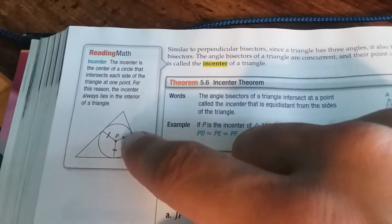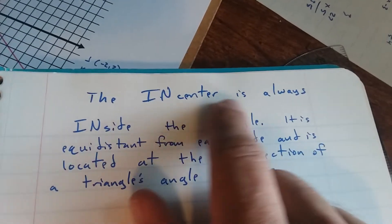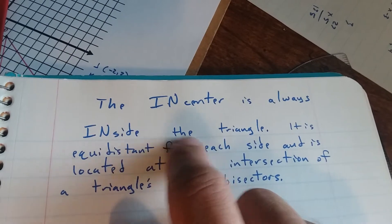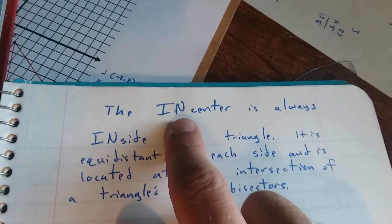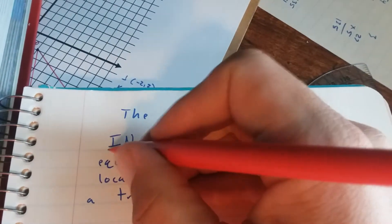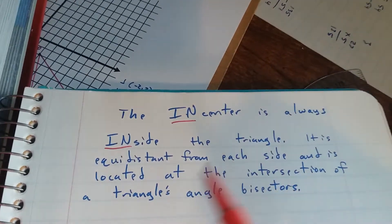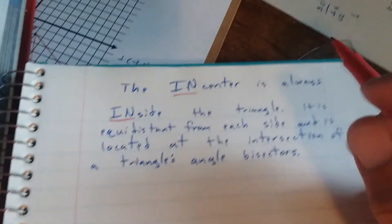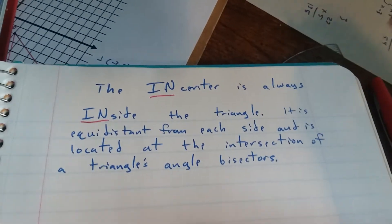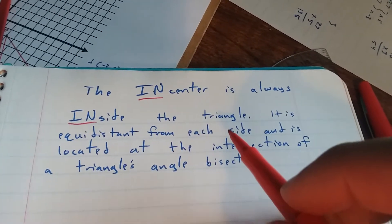The in-center is the point. I want you to copy this down. The in-center is always inside the triangle. I intentionally capitalized the I and N to help you remember that the in-center is always inside the triangle. It's a circumcenter that can be inside or outside or on the triangle. The in-center is always inside the triangle.